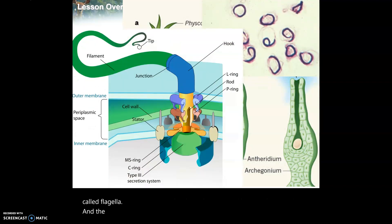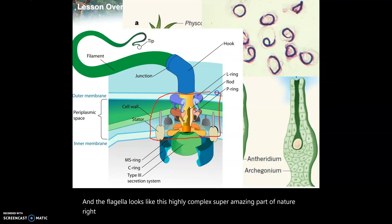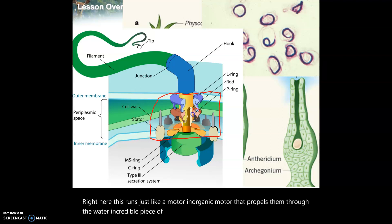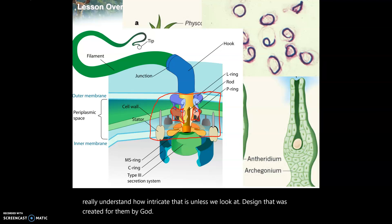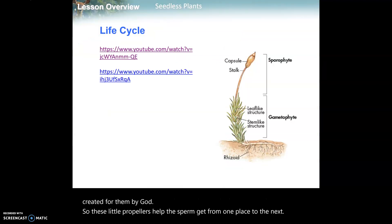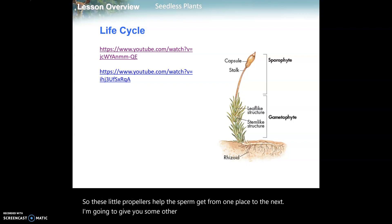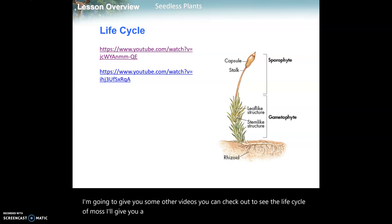The flagella works like an organic motor that propels the sperm through the water - an incredible piece of nature with so many unique parts. It's difficult to really understand how intricate it is unless you look at the design. These little propellers help the sperm get from one place to the next. I'll give you some other videos you can check out to see the life cycle of moss to help you study.